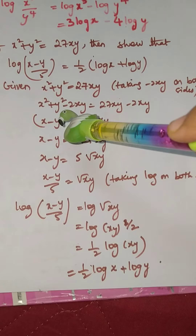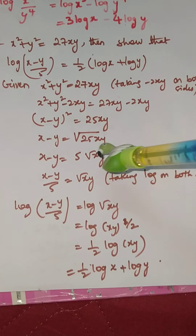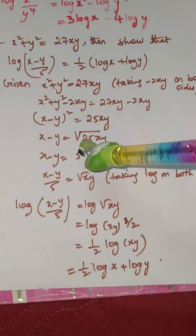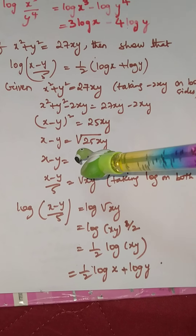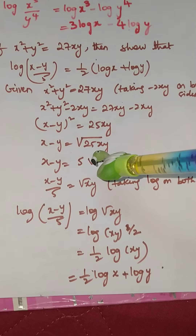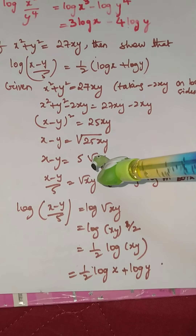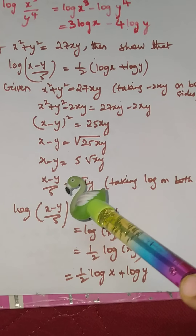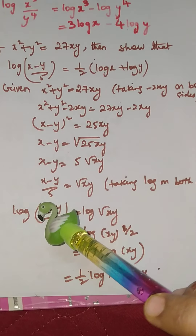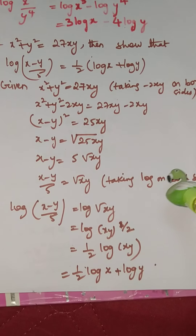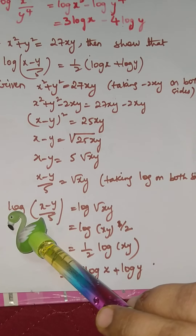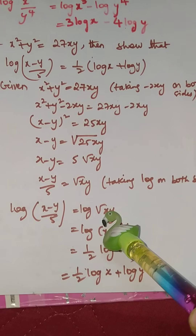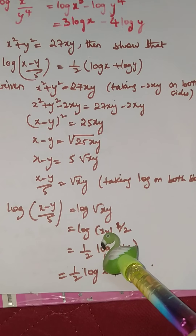Taking the square root of both sides: x−y = √(25xy) = 5√(xy). Dividing both sides by 5: (x−y)/5 = √(xy). Now taking log on both sides: log((x−y)/5) = log(√(xy)).